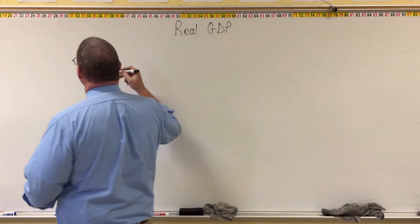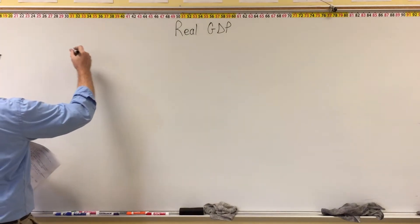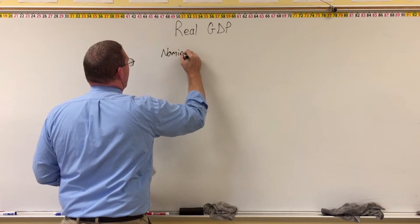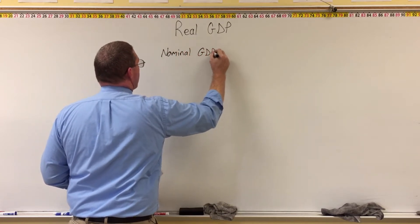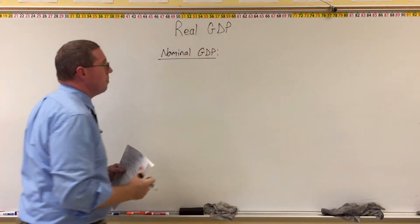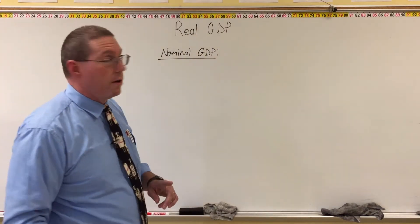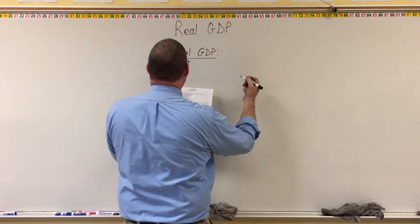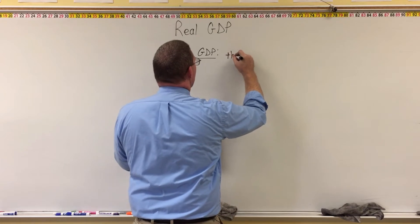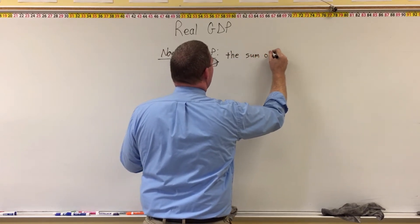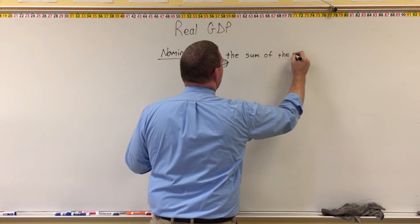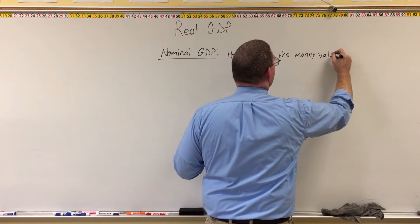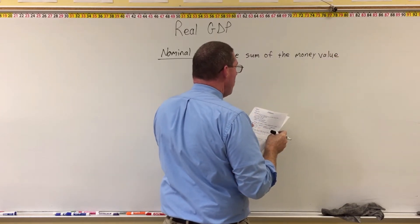So let's start with a definition for a phrase called nominal GDP. In order for you to understand real GDP, I need you to first understand nominal GDP. Nominal GDP is the sum of the money value of all output in prices current to the year of production.